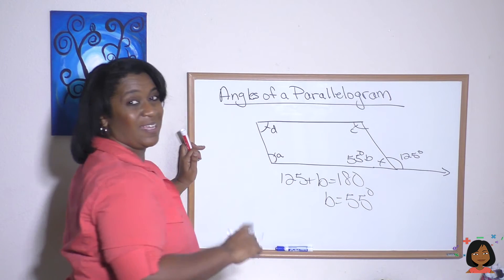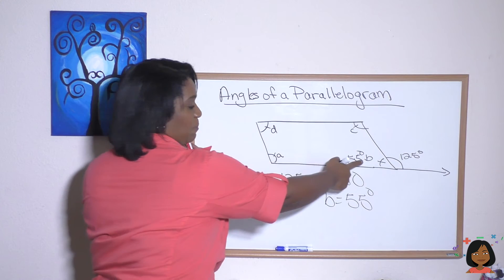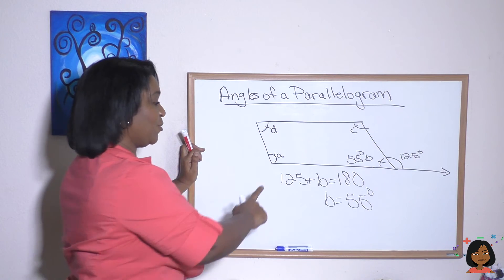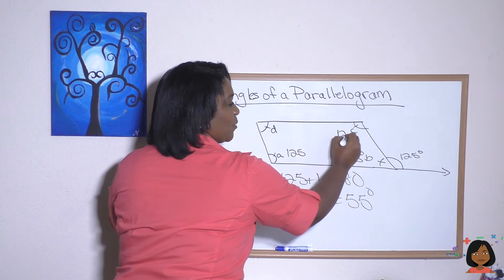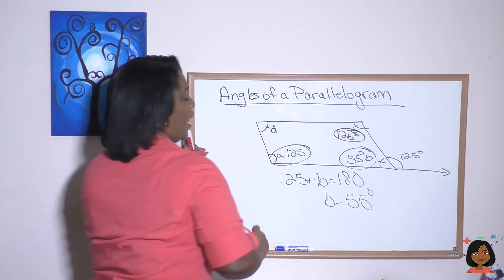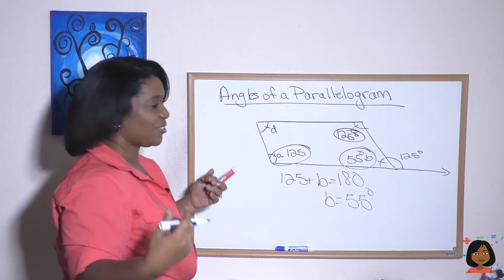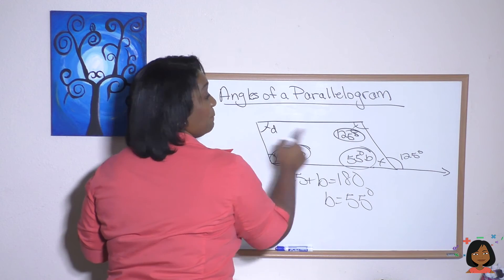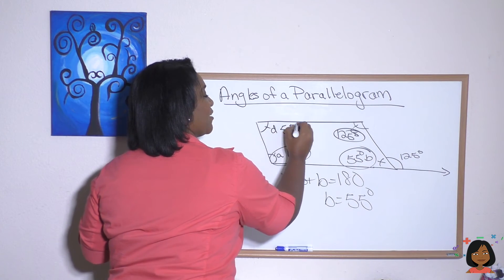Now remember, adjacent angles add up to 180. So to B, A is adjacent, which means that it will equal 125. And also C is adjacent, which means it will equal 125. And what about D? We know D is a non-adjacent angle. So it equals angle B. B and D equal each other. So this one is 55 degrees.